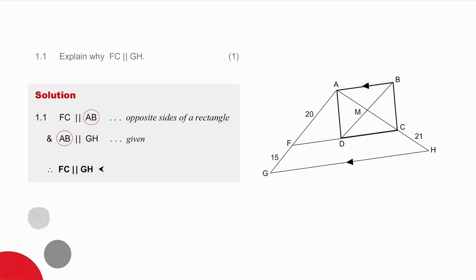So I can say that FC is parallel to AB because of my rectangle, but I know that AB is parallel to GH because they gave me that. Therefore FC is parallel to GH.